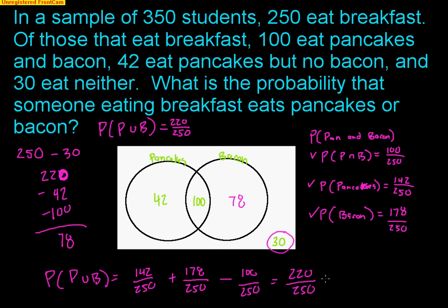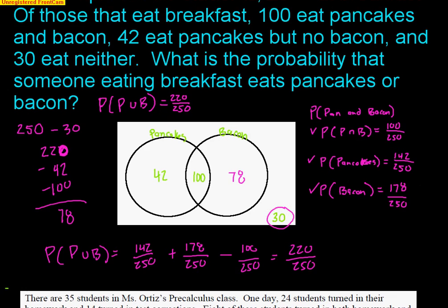So 220 kids like pancakes or bacon. The 30 is the neither — those are all the kids on the outside. That's why these Venn diagrams are really nice, because they allow us to see all kinds of probability when we see those four numbers in that picture.